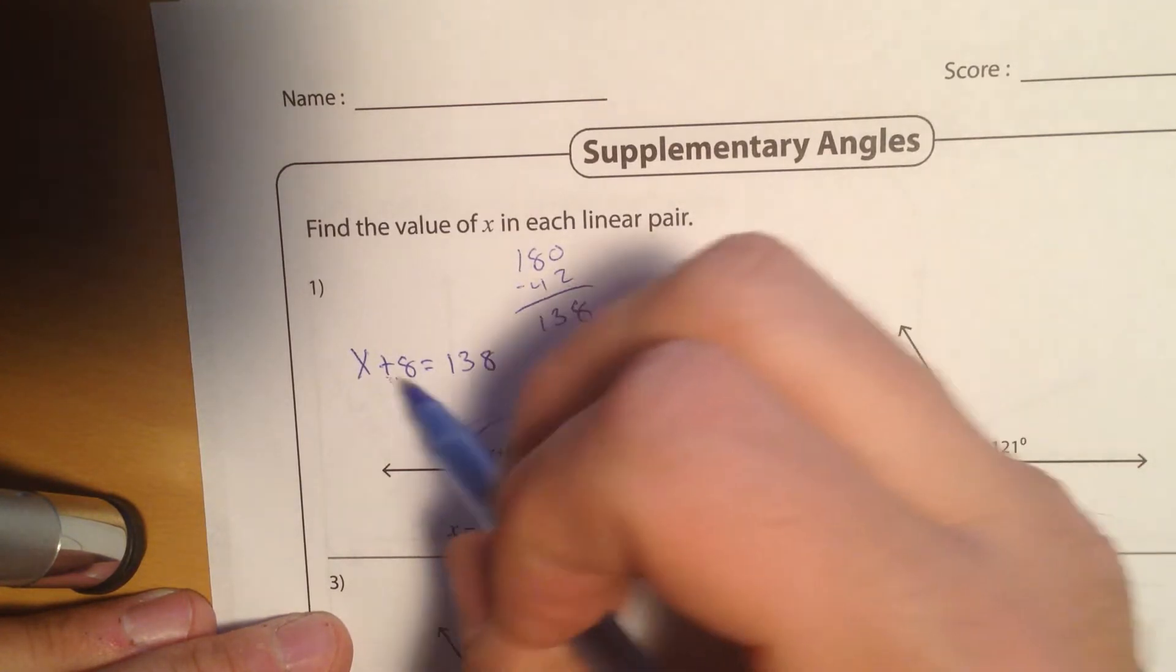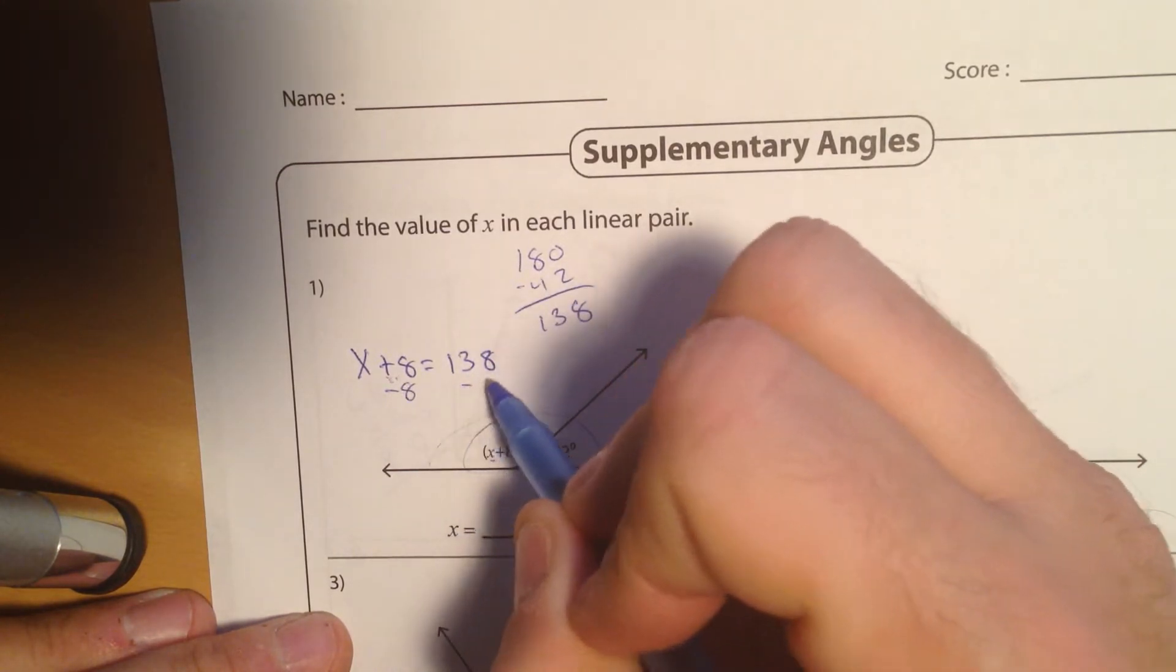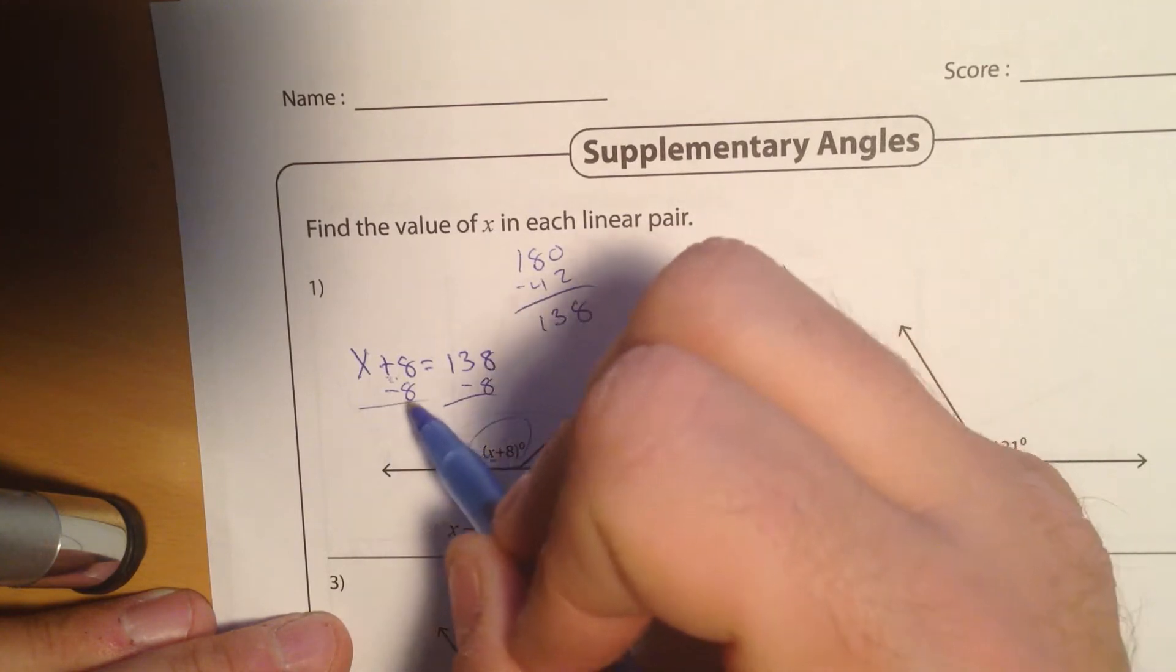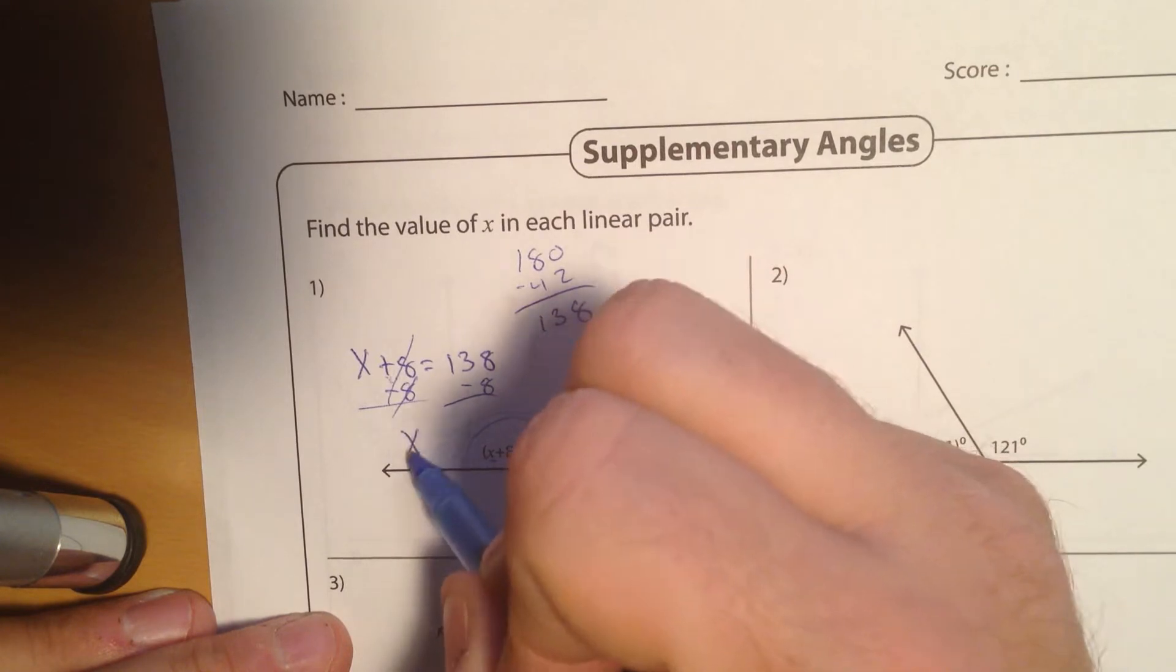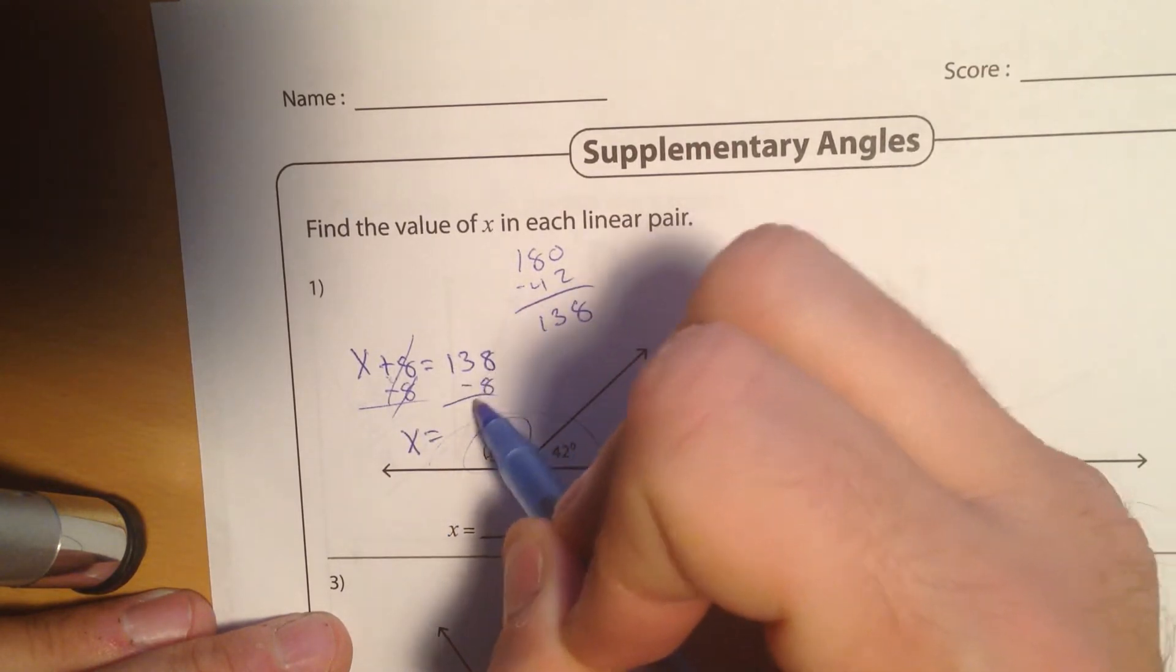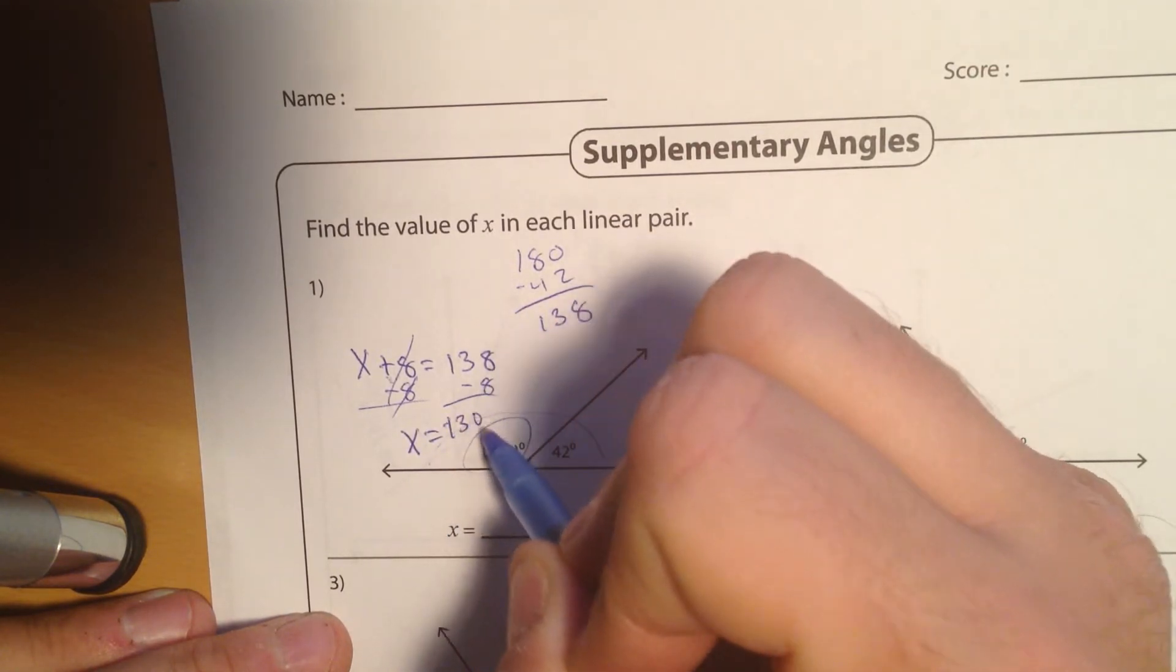So here we have added, so we're going to take away the 8, or add the opposite. So if I do that, the 8's disappear. Here, 8 minus 8 is 0, 0 plus x is just x. And over here, 138 minus 8 is going to be just 130.